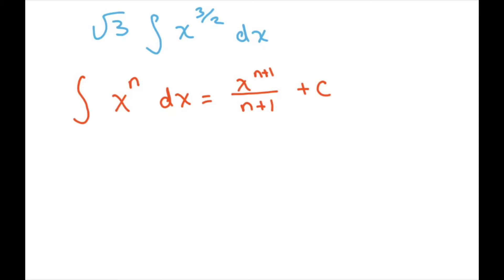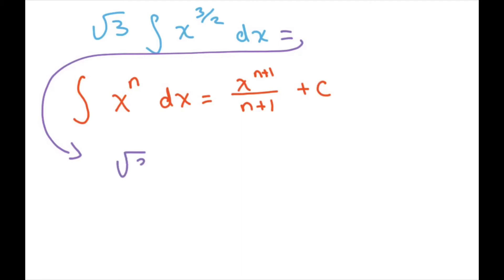So we get square root of 3, and this is going to equal — write down your square root of 3 and we get x to the 3 halves plus 1, over 3 halves plus 1, plus c.